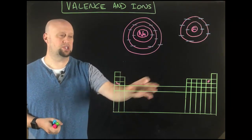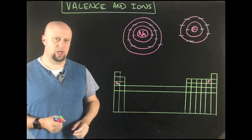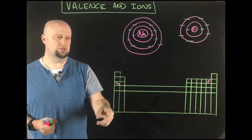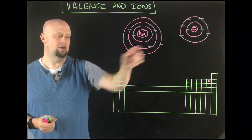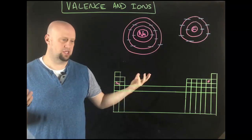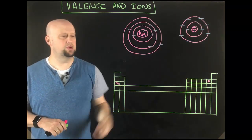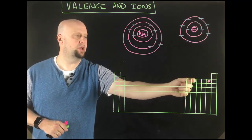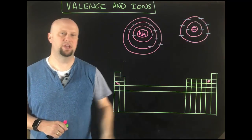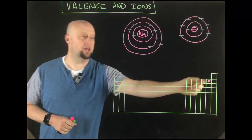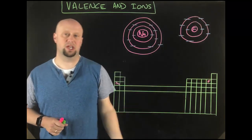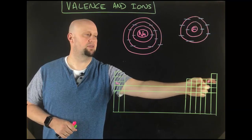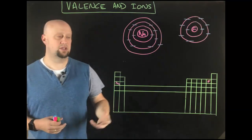So what does that mean? If I'm doing sodium, sodium's in the first column, so it has one valence electron — pretty straightforward. If we were doing fluorine, we would count 1, 2, 3, 4, 5, 6, 7 valence electrons. If you were going to neon, which is next to fluorine, it's got 1, 2, 3, 4, 5, 6, 7, 8 valence electrons.